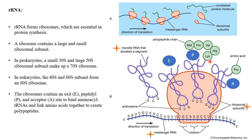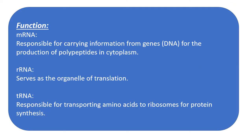Once the ribosome reads the terminal codon, translation stops. The polypeptide that is formed is released, the complete protein molecule is released, and the ribosomal subunits are also released.